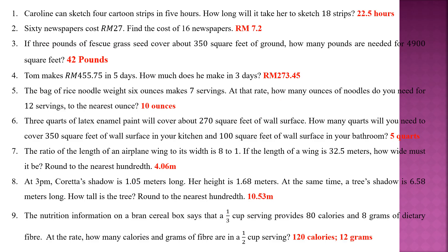Let's go through a few questions from Exercise 3.3 — they are mostly cross-multiplication questions. Carolyn can sketch 4 cartoon strips in 5 hours; how long to sketch 18? Using the shortcut: 18 goes on top, divide by 4, times 5. Next: 16 newspapers cost 27; find the cost of 16. Using the shortcut: 16 divides 16, times 27.